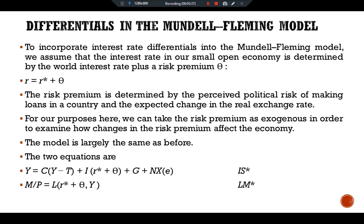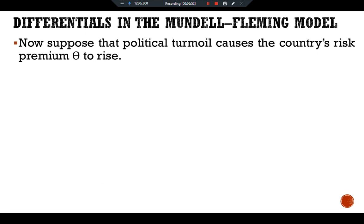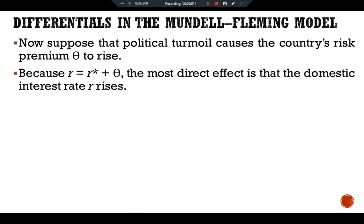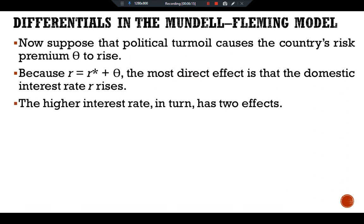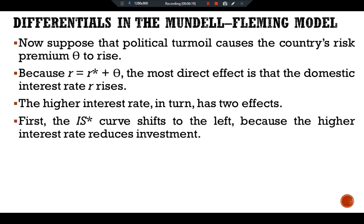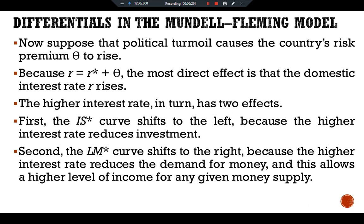Holding the risk premium constant, the tools of monetary policy and trade policy work as already discussed. Now suppose that political turmoil causes the country's risk premium theta to rise. Because R = R* + theta, the most direct effect is that the domestic interest rate rises. The higher interest rate in turn has two effects: first, the IS* curve shifts to the left because the higher interest rate reduces investment; second, the LM* curve shifts to the right because the higher interest rate reduces the demand for money, allowing a higher level of income for any given money supply.